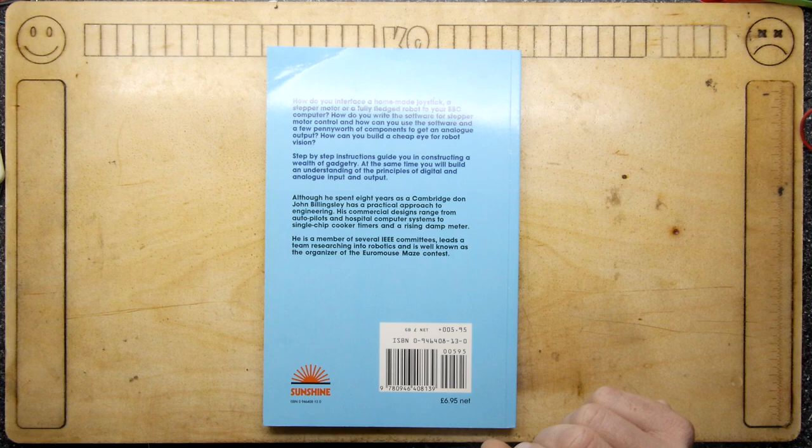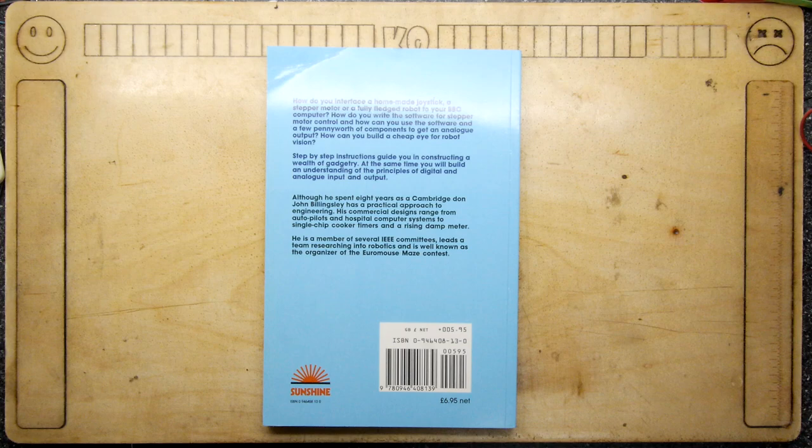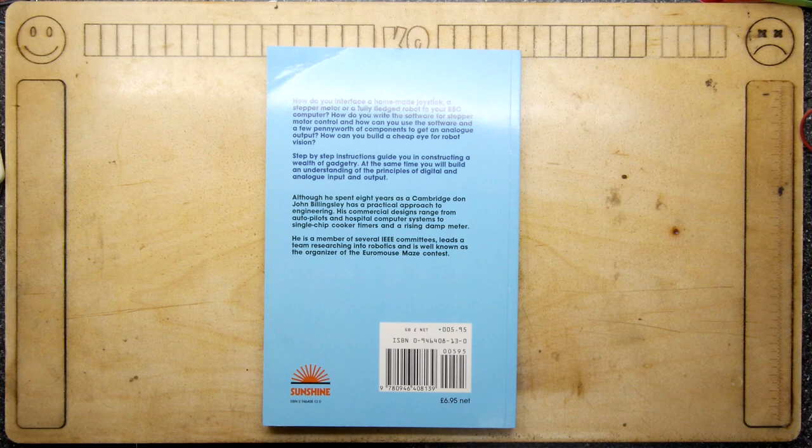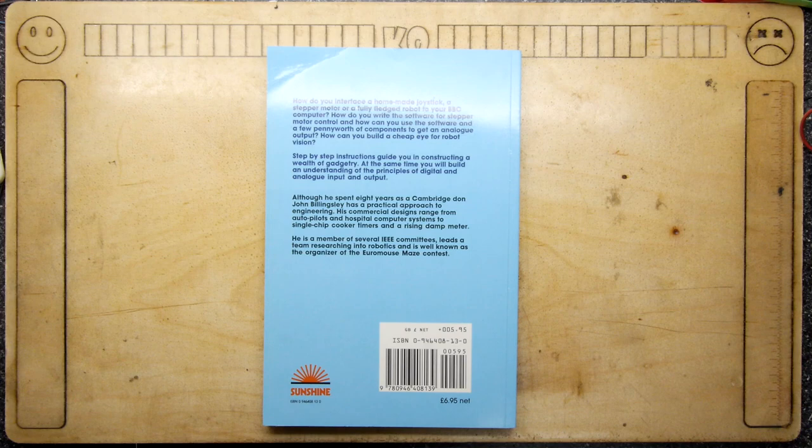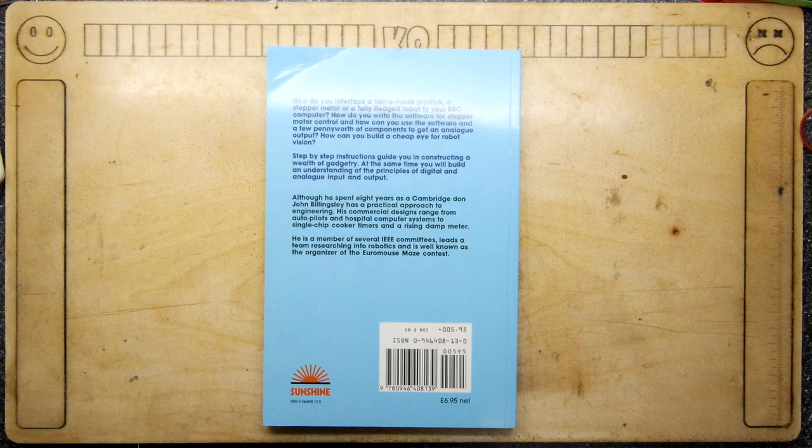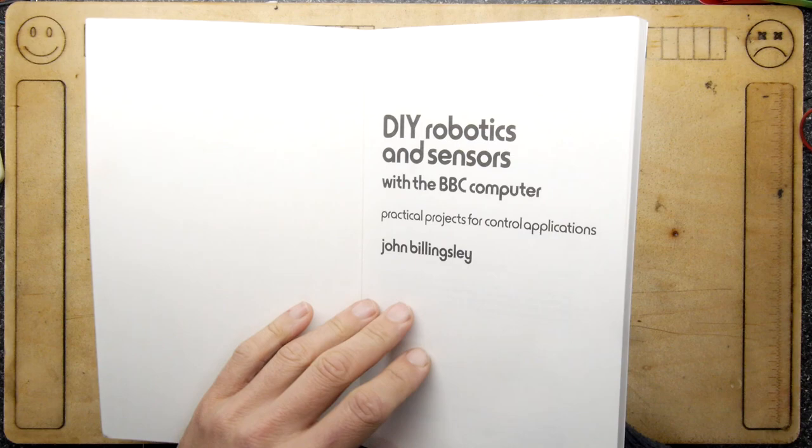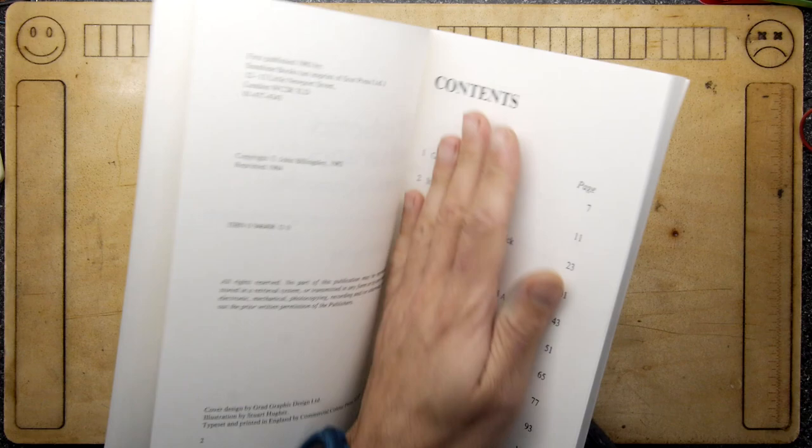Although he spent eight years as a Cambridge don, John Billingsley has a practical approach to engineering. His commercial designs range from autopilots and hospital computer systems to single chip cooker timers. He is a member of several IEEE committees, leads a team researching into robotics, and is well known as the organizer of the Euromouse maze contest. Well I think John Billingsley would have been somebody I would love to know. Let's have a look under the hood.